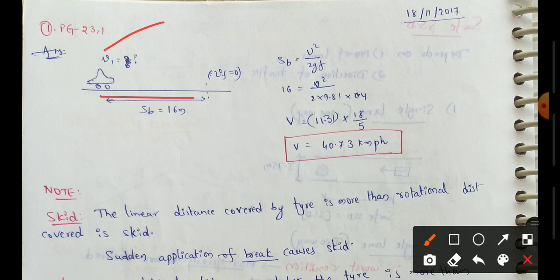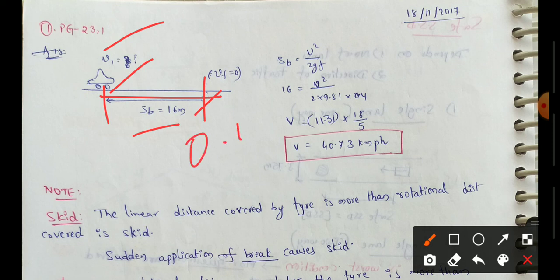Looking at the given data: the braking distance sb is 16 meters. The coefficient of friction between tires and pavement is 0.4.